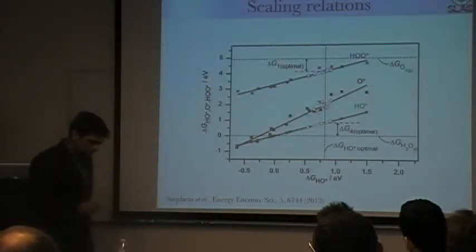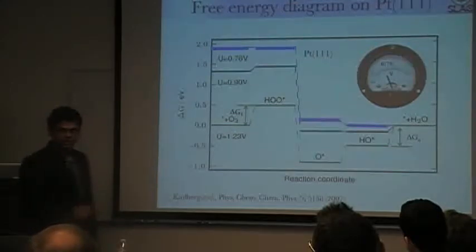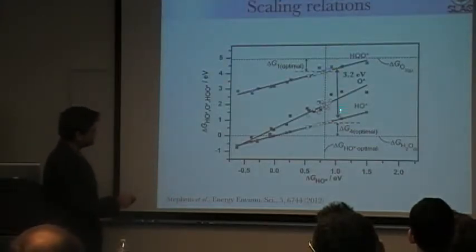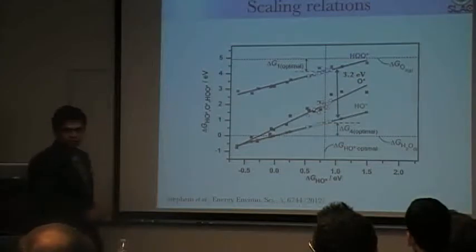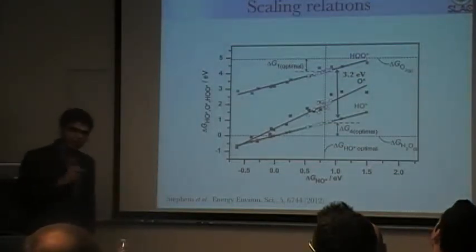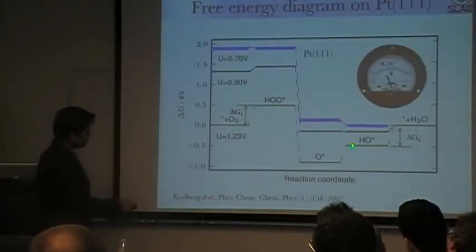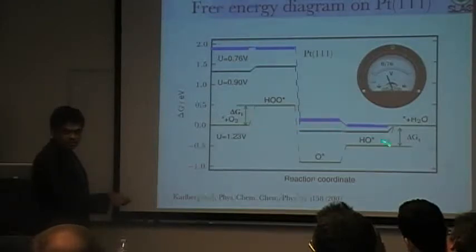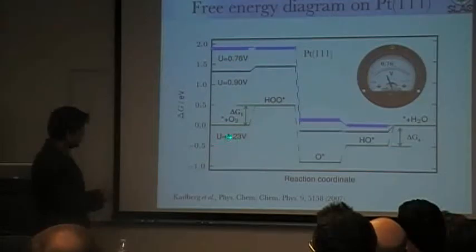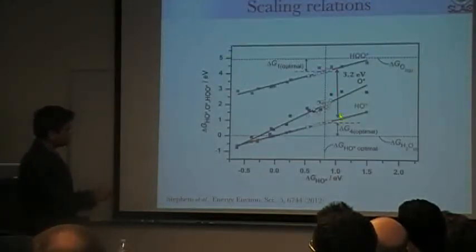So what that means is while you can make this step better, you will get to a point where then this step becomes limited, right? And what's really problematic is these two are separated by exactly 3.2. They are separated by this constant amount of 3.2. Why is this bad? This is really, really bad. The reason this is bad is because OH and OOH are separated by two steps, right? So the free energy difference in an ideal catalyst should be twice 1.23, which is 2.46. But the difference is 3.2.